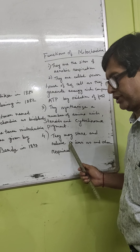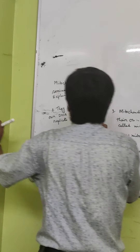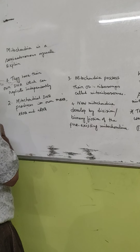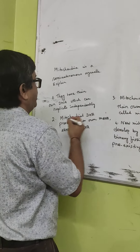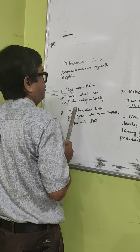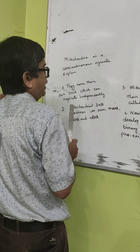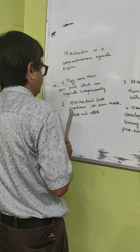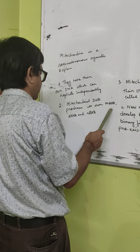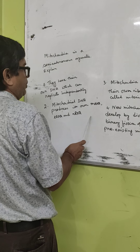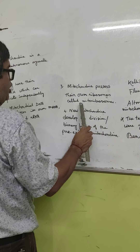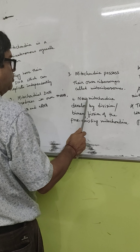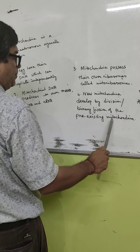Why is mitochondria called a semi-autonomous organelle? Two cell organelles are called semi-autonomous: chloroplast and mitochondria. This is because they have a certain degree of autonomy. First, they have their own DNA molecule which can replicate independently. This mitochondrial DNA produces its own mRNA, tRNA, and rRNA required for protein synthesis. Mitochondria also possess their own ribosomes called mitoribosomes, which carry out protein synthesis.